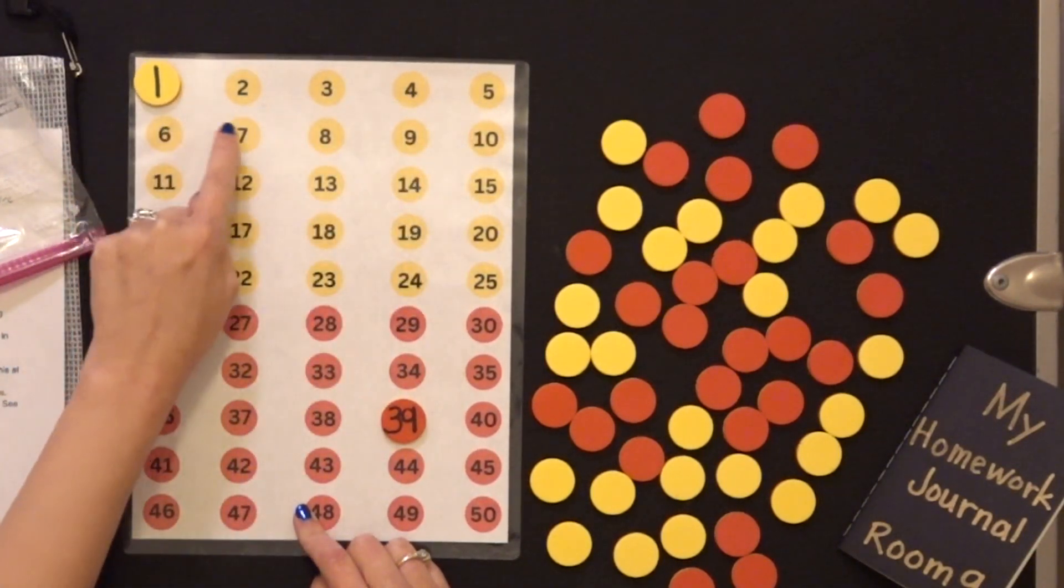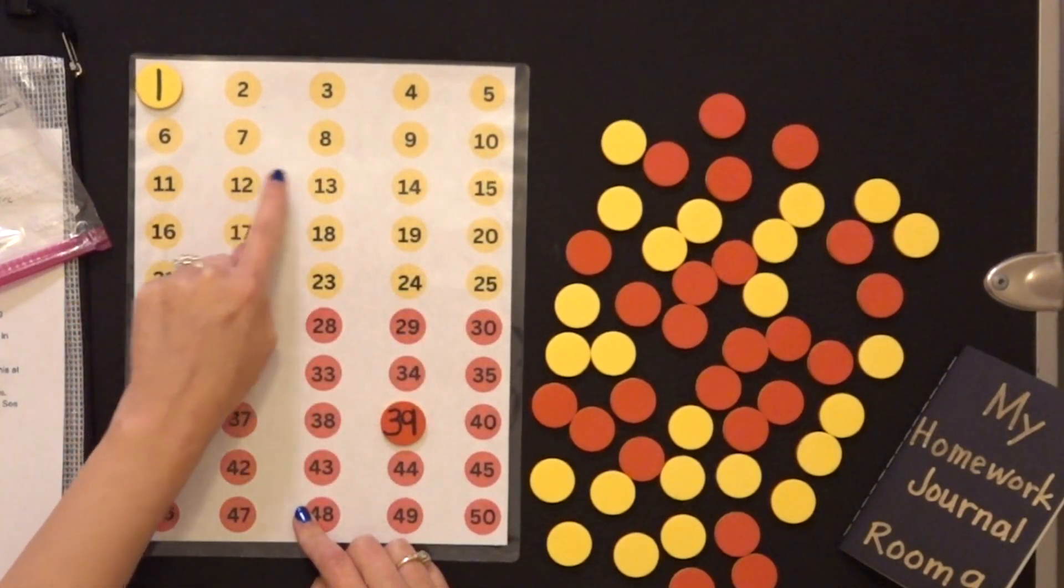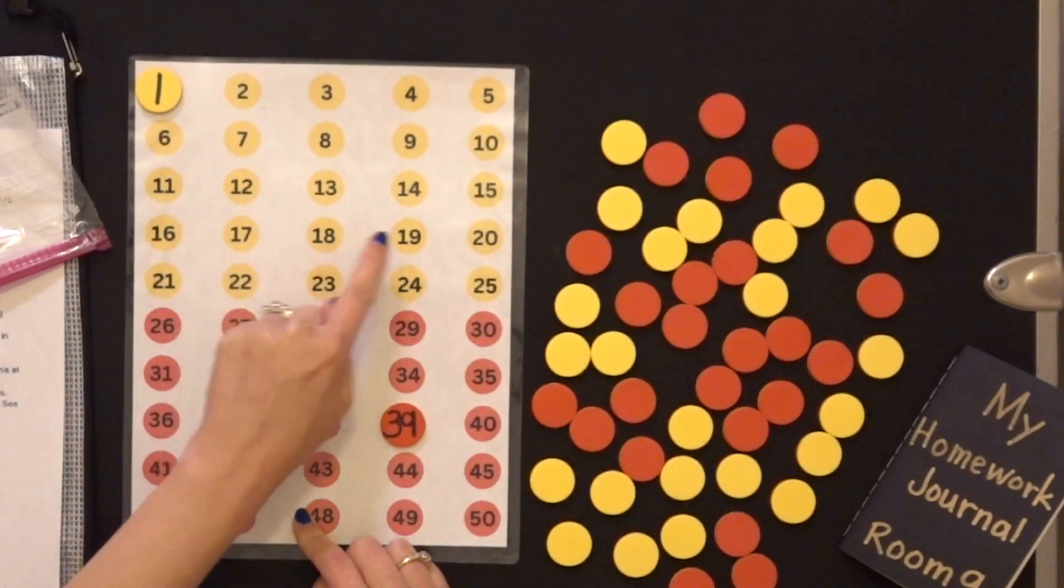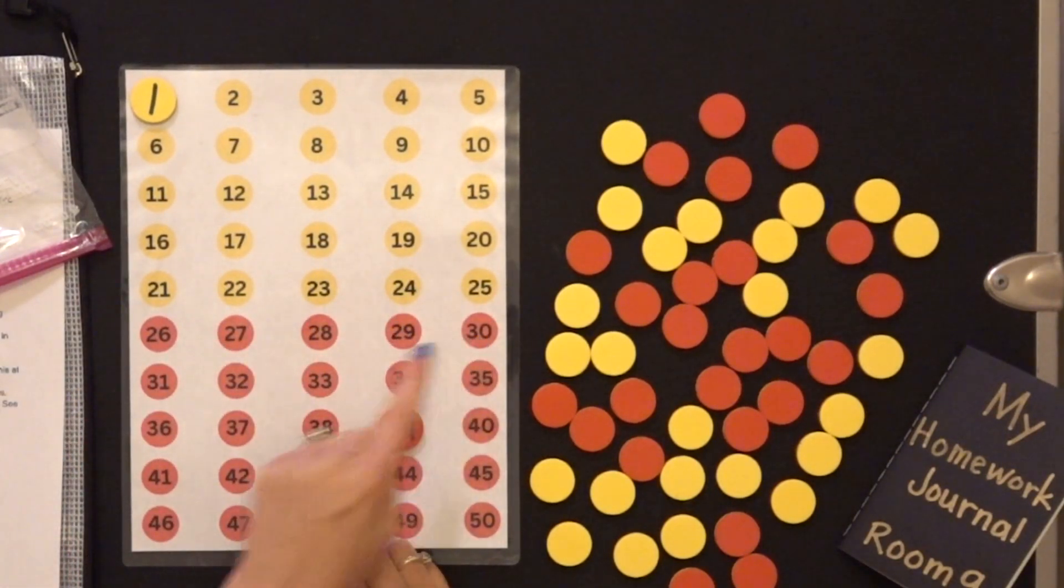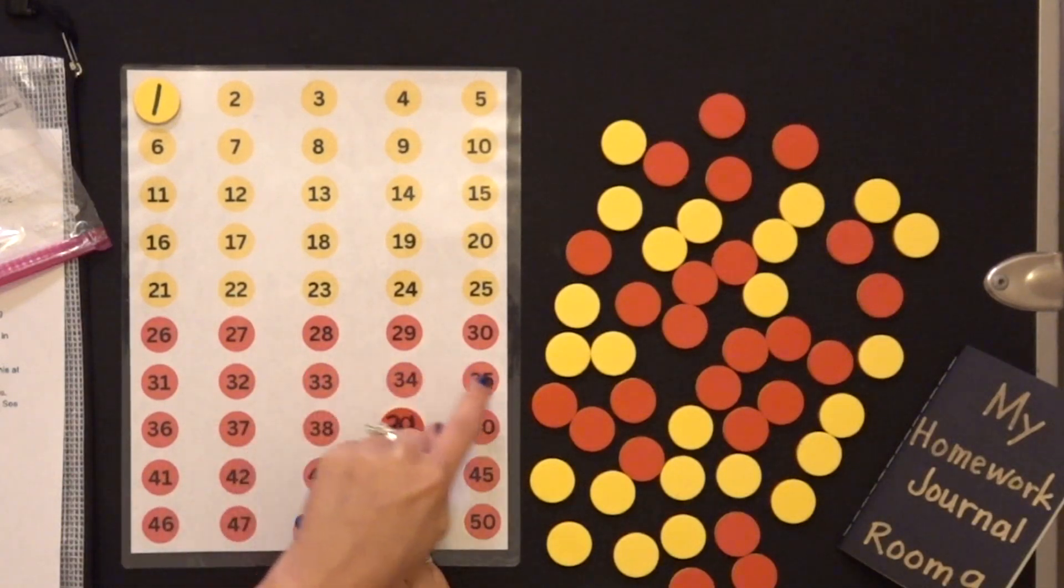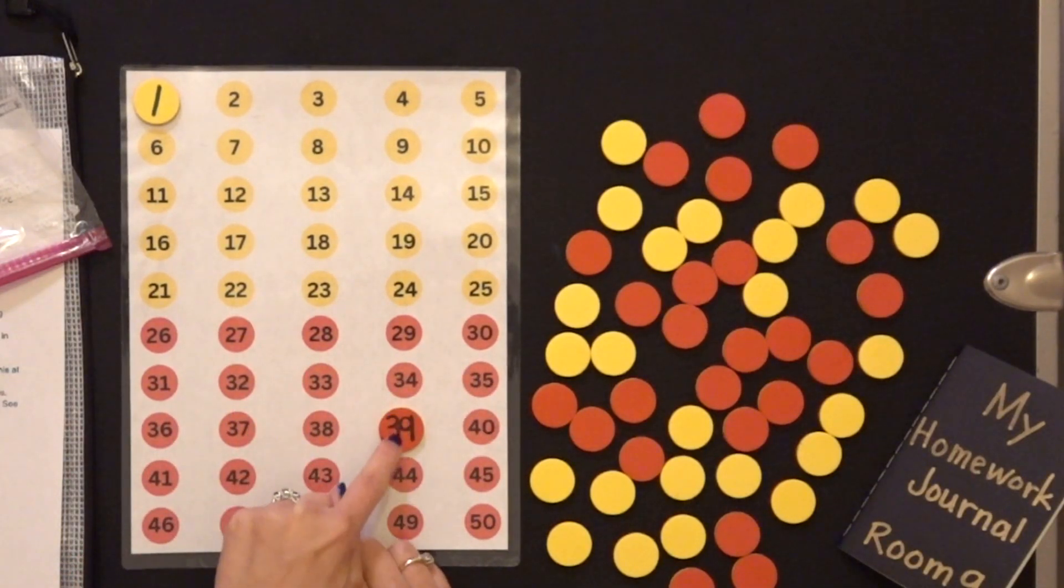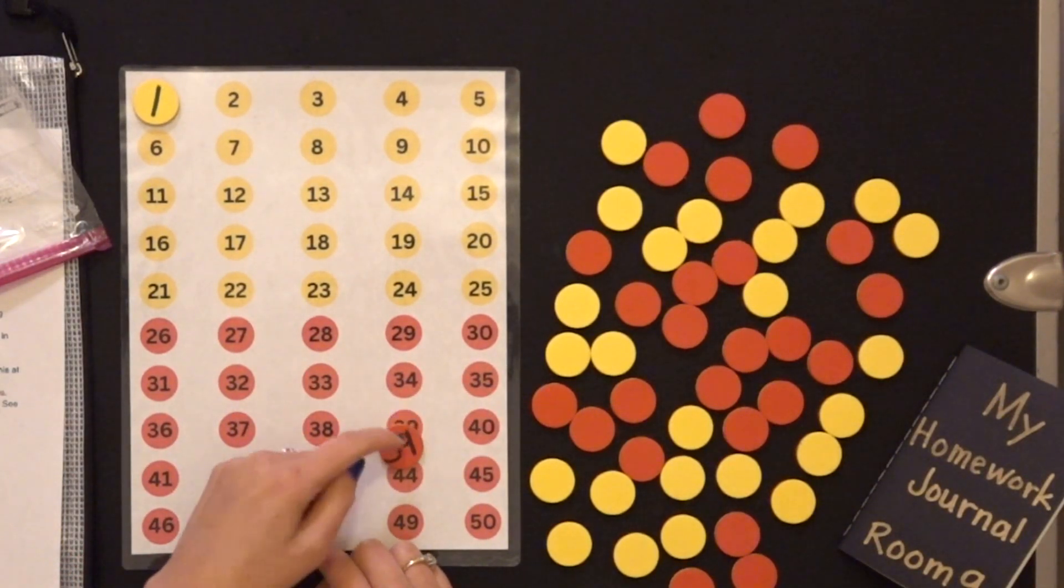2, 3, 4, 5, 6, 7, 8, 9, 10, 11, 12, 13, 14, 15, 16, 17, 18, 19, 20, 21, 22, 23, 24, 25, 26, 27, 28, 29, 30, 31, 32, 33, 34, 35, 36, 37, 38, 39.